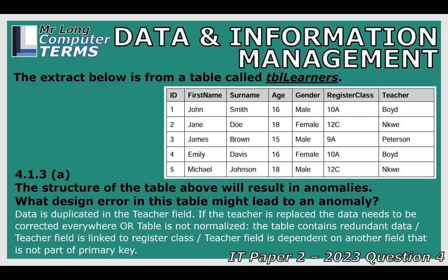Teacher has nothing to do with the student — it's associated with the register class. Even if you remove all students, the teacher is still allocated to a register class. When it comes to normalization, every field must be dependent on the primary key, and the teacher field is not. That is the fundamental problem with the structure of this table.